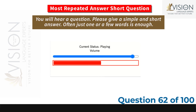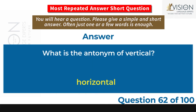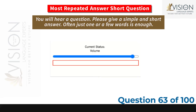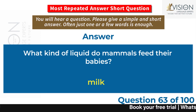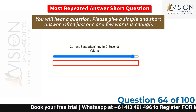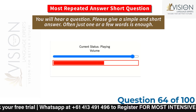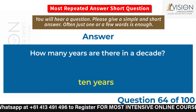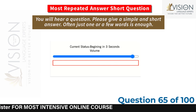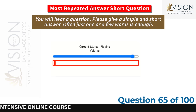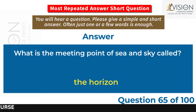What is the antonym of vertical? Horizontal. What kind of liquid do mammals feed their babies? Milk. How many years are there in a decade? Ten years. What is the meeting point of sea and sky called? The horizon.